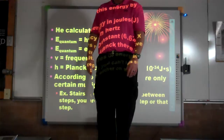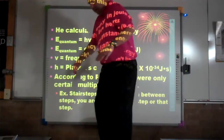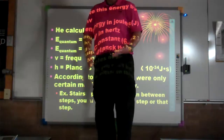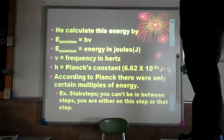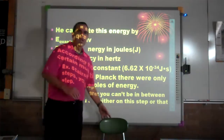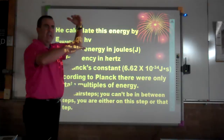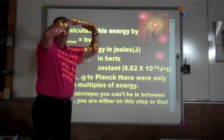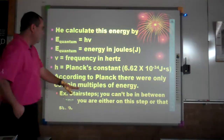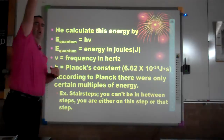The thing is, you can't be in between energy levels. Electrons either gained or lost that energy: if they gained energy, they had to gain enough to jump up a level; when they lost energy, they had to lose enough to fall down. You're either here, or here, or up here — there is no in between for quantum energy. It's certain stair steps; you can't be in between steps.